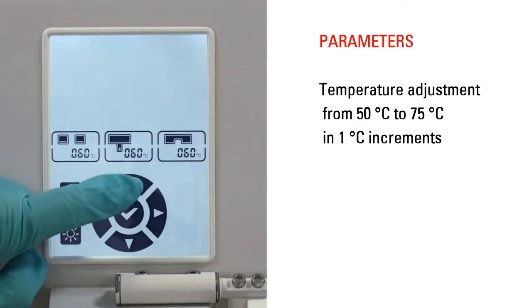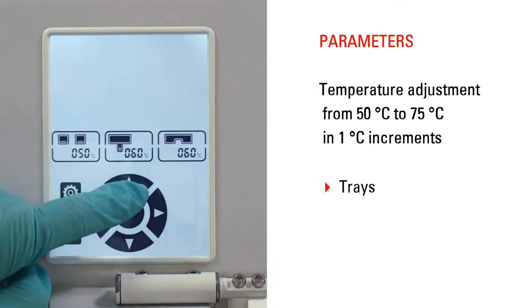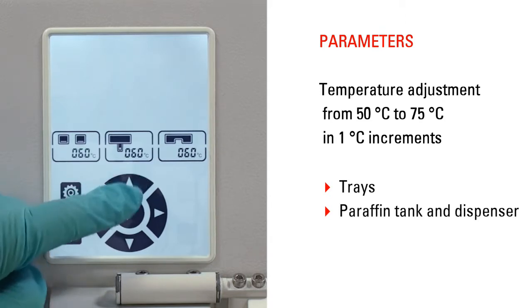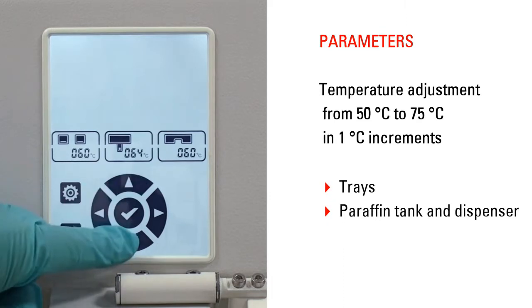The temperatures for the instrument's different heating areas, such as trays, paraffin tank and dispenser, and working surface and forceps holder can be adjusted separately from 50 to 75 degrees Celsius in 1 degree Celsius increments.